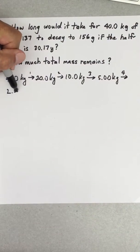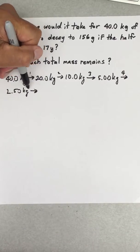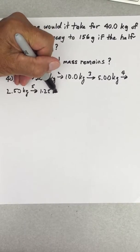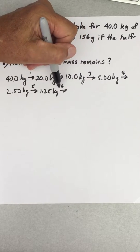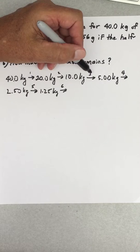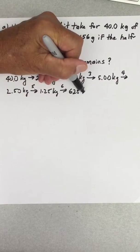So now we got 2.5 kilograms. Five half-lives, we'd have 1.25 kilograms. Another half-life goes by, we'd have 0.625 kilograms, but I'm just going to put 625 grams.